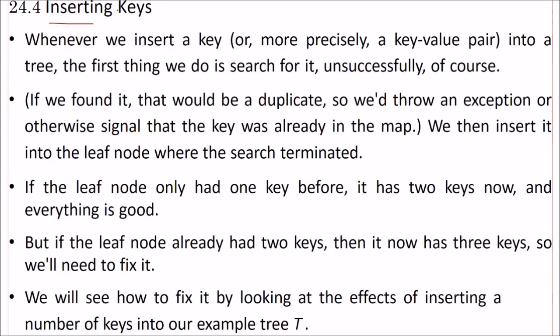Whenever you want to insert a key, or rather more precisely a key-value pair into a tree, the first thing we need to do is search for it, because we don't want to have duplicate keys. It will be an unsuccessful search, and we insert it into the leaf node where the search is terminated. If the leaf node only has one key before, it has two keys now and everything is good.